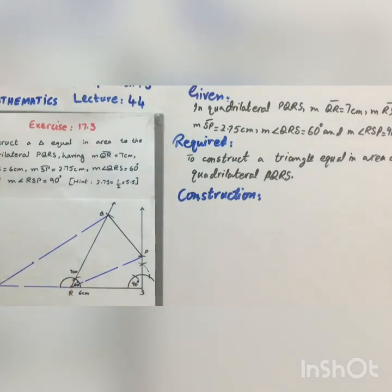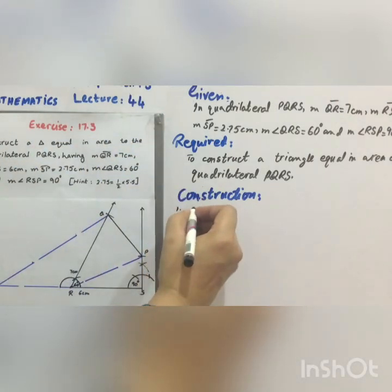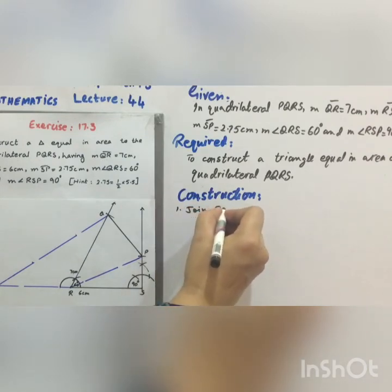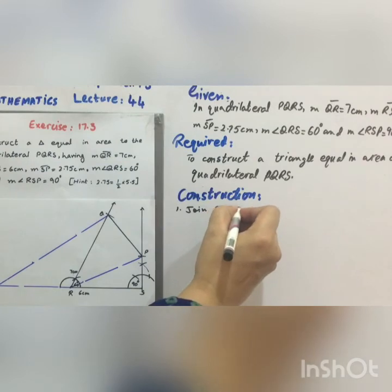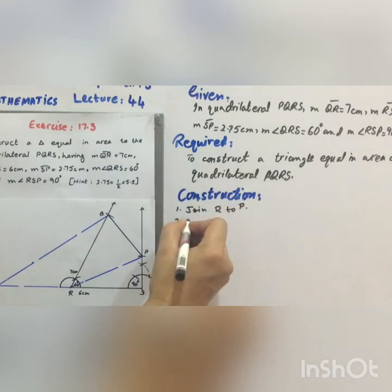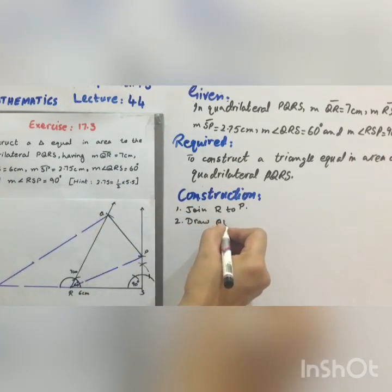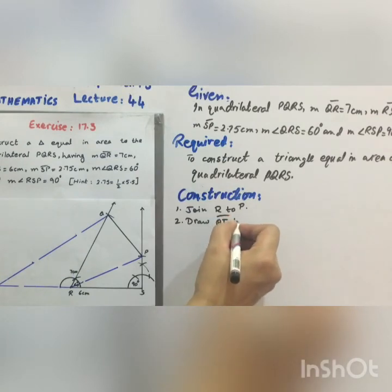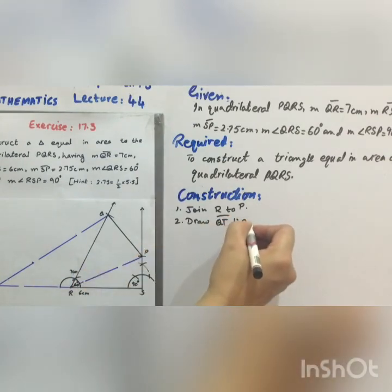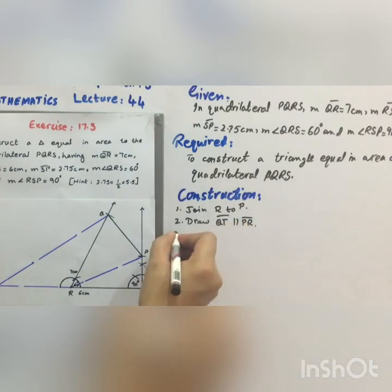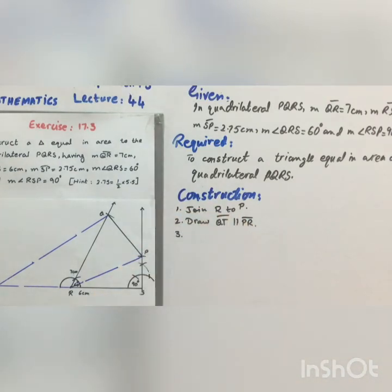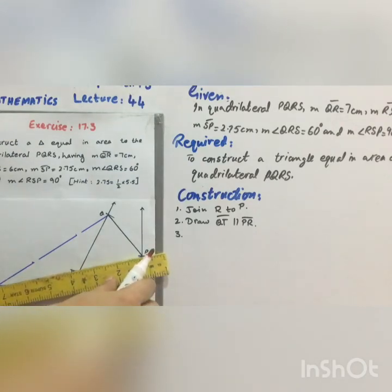Note down this step as step number 1: Join R to P. Step number 2: Draw QT parallel to PR. Step number 3: Join P to T.